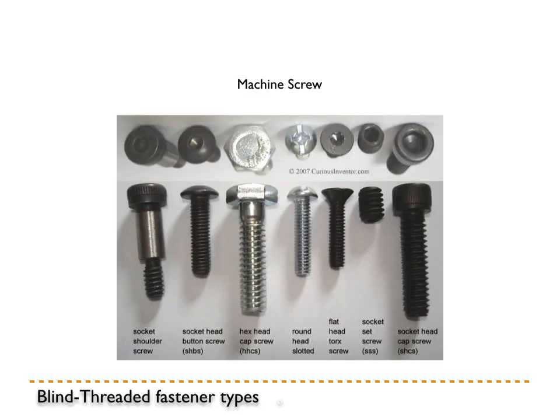There are lots of different types of fasteners of all categories that we'll be going over today. The blind threaded fastener types are simply what we would commonly call screws. There are lots of different variations. Starting on the left: a shoulder screw, a socket head button screw, cap screws with hex heads, round-headed screws, flat head screws, set screws with a socket drive, and socket head cap screws. This is just a very small number of the actual choices available, but it's a good place to start.